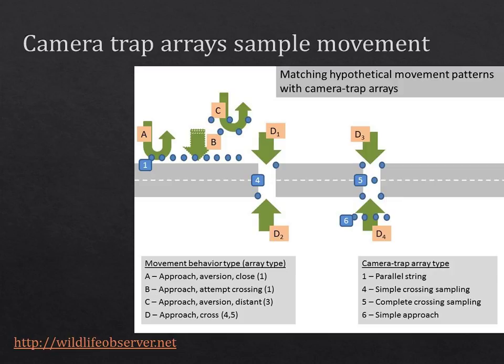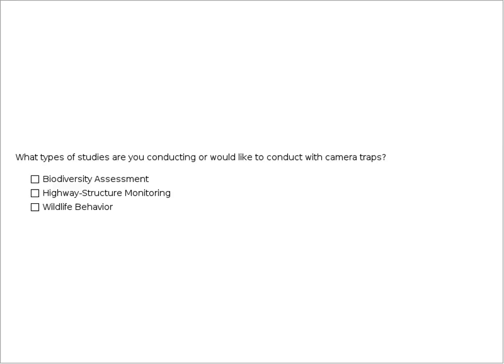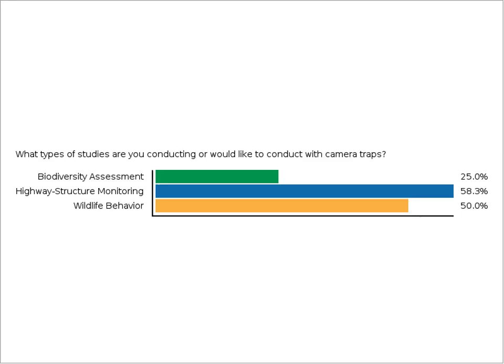A polling question asks what types of studies you're using camera traps for. It looks like a pretty even mix dominated by highway structure monitoring, but those looking at wildlife behavior and wildlife occupancy or occurrence are also well represented. This is representative of the camera trap field in general, where cameras are used to understand how wildlife occur and move, and also how they do that in relation to infrastructure.